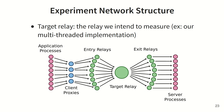In order to saturate the relay, Tor clients on our experimental Tor network built hundreds of circuits through a single target relay and simultaneously sent data through these circuits to a server. We ran all of the relay, proxy, client, and server processes on a single computer which we'll call the control server, except for the target relay, which ran on its own computer. All streams transfer the same amount of data and started at the same time.